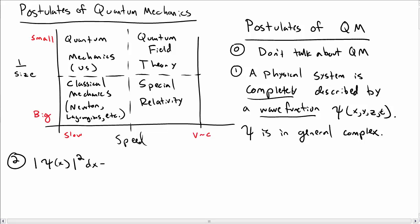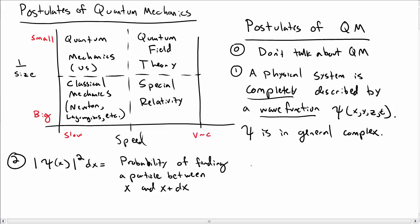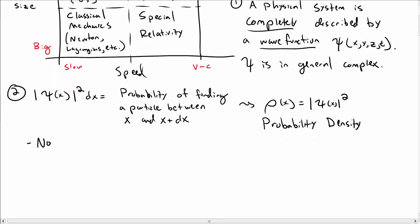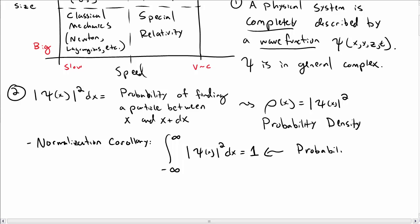Postulate number two is that the absolute value of psi squared dx is the probability of finding a particle between x and x plus dx. What this means is that rho of x, a probability density function, is the absolute value of psi squared. Recall the normalization condition: the integral from negative infinity to infinity of psi squared dx must equal one — the probability of finding the particle somewhere must add up to one.